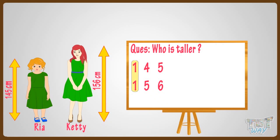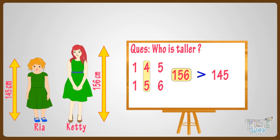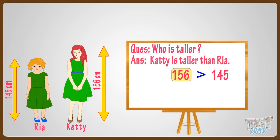Now compare the tens place digits — four and five. Five is bigger than four, and the number in which we get the bigger digit first is the bigger number. So one hundred and fifty-six is bigger than one hundred and forty-five. So Catty is taller than Rhea.